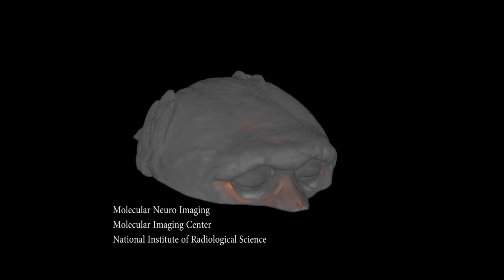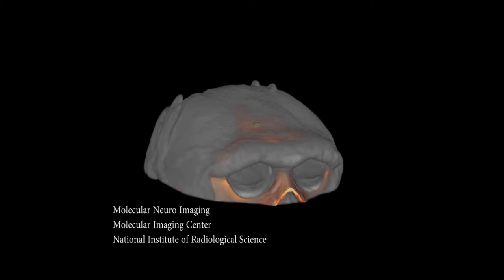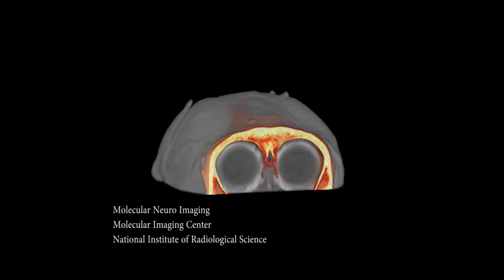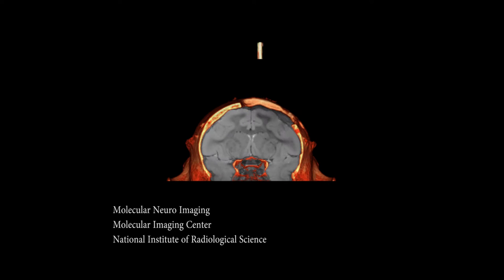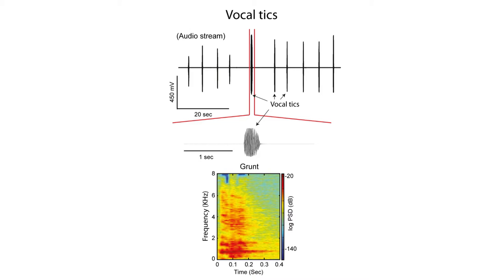We used a combination of CT and MRI-guided electrophysiology to target a critical node within the limbic system, a region called the nucleus accumbens. Once the injectrode was in position and the GABA antagonist perfused, animals began to display periodic vocalizations that resembled grunts.